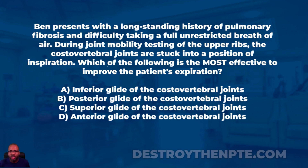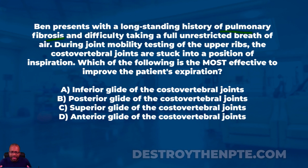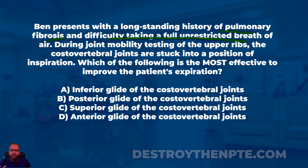Ben presents with a long-standing history of pulmonary fibrosis. With pulmonary fibrosis, the lung tissue is being scarred down — it becomes very scar-like and is not able to expand very well. The patient has difficulty taking a full unrestricted breath of air, which makes sense: with scarred-down lung tissue that can't expand well, the person is not able to inhale well.